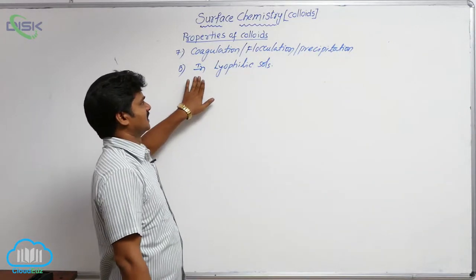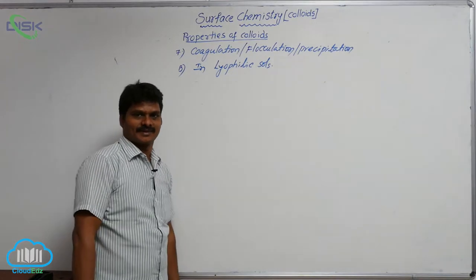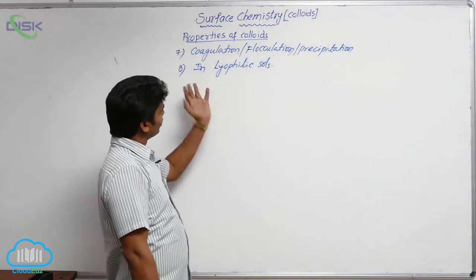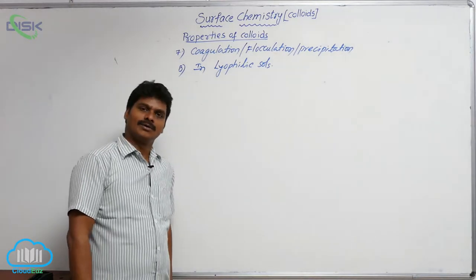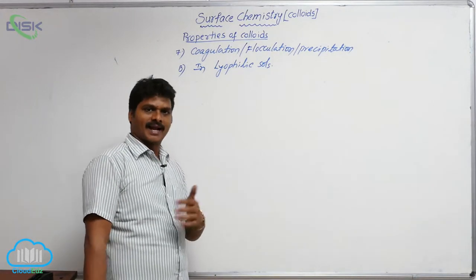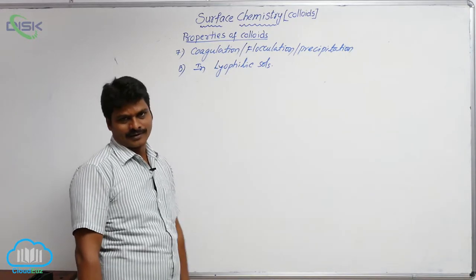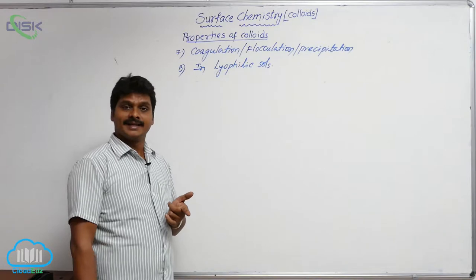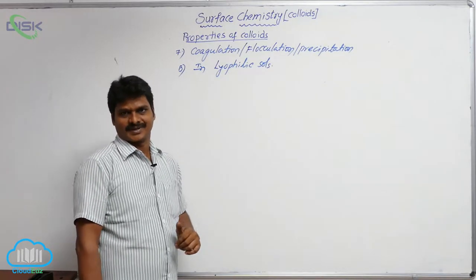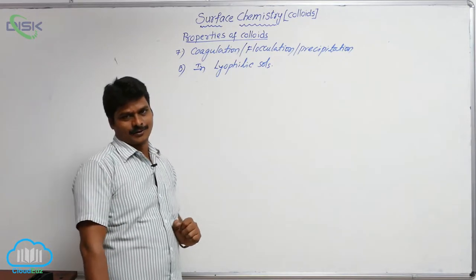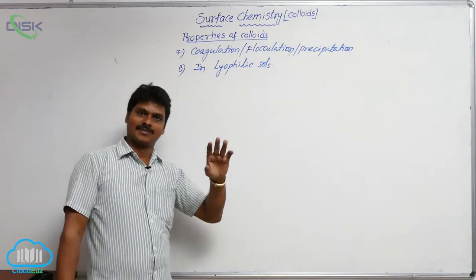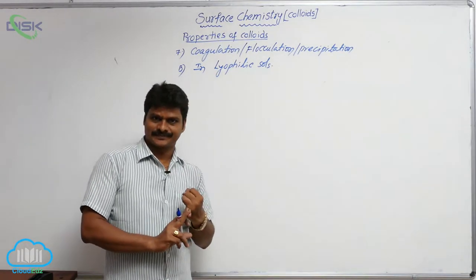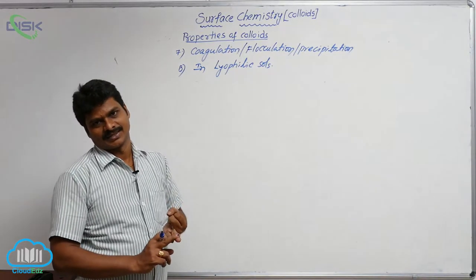Let's look at the coagulation of lyophilic salts. We already discussed how to coagulate a lyophobic salt. Lyophilic salts are more stable because not only are there charges on the colloidal particles, but there is another process called solvation that is also responsible for the stabilization. A lyophilic sol is stabilized in two ways: first by absorbing charges from the electrolyte, and second by the solvation process.